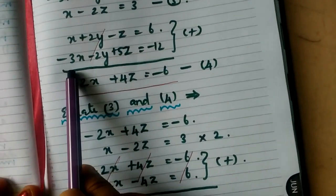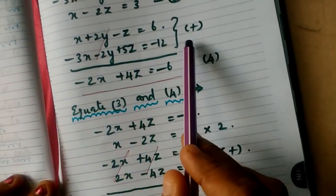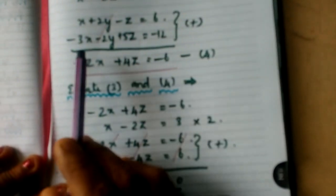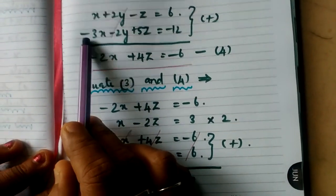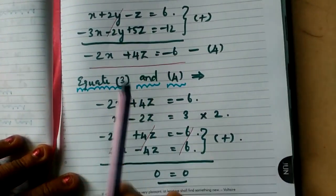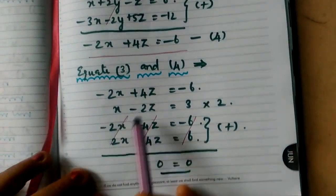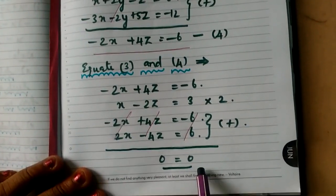Suppose if you are subtracting, definitely you must change the symbol. For example, minus 3 become plus 3, the way it will go. So that is why everything is cancelled. So 0 is equal to 0.